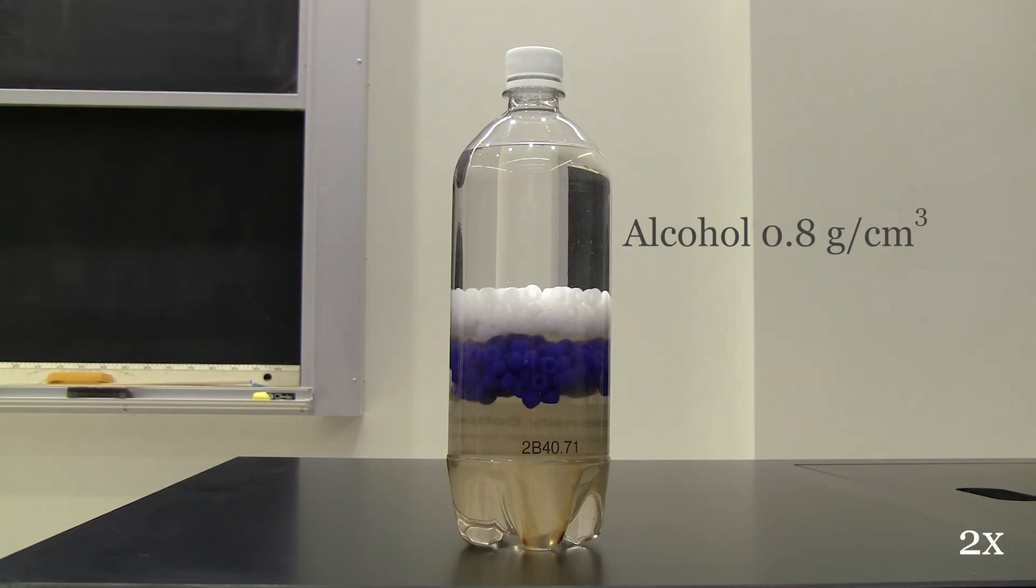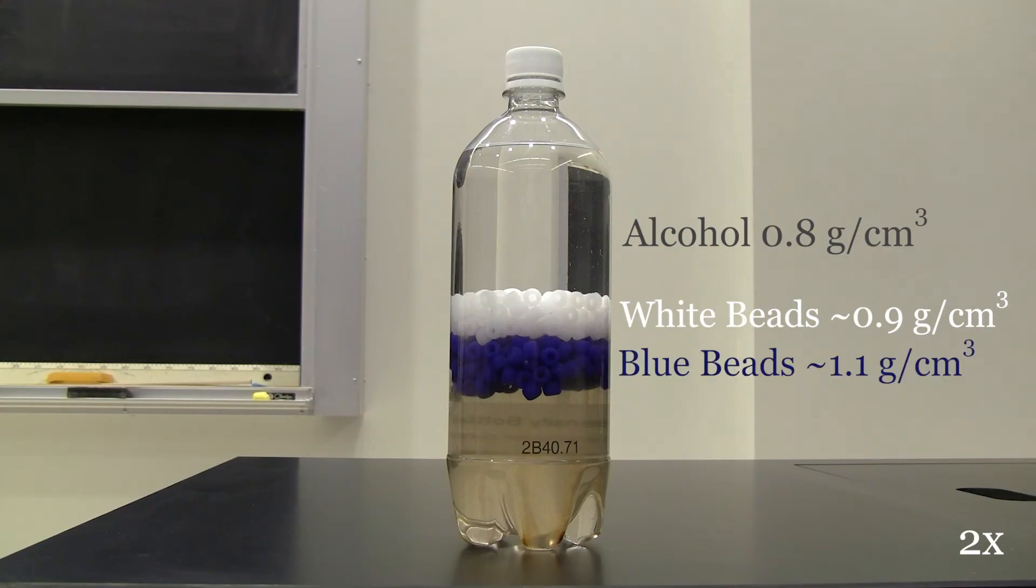Alcohol, with a density of about 0.8 grams per centimeter cubed on top, then white beads, blue beads, and finally a salt solution with a density of about 1.3 grams per centimeter cubed on the bottom.